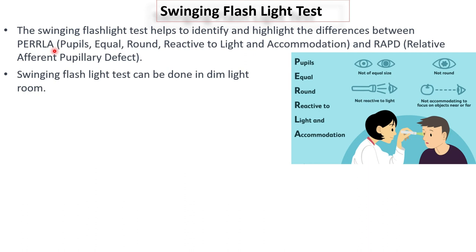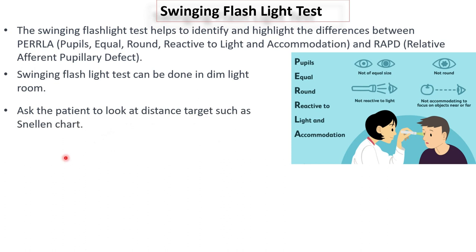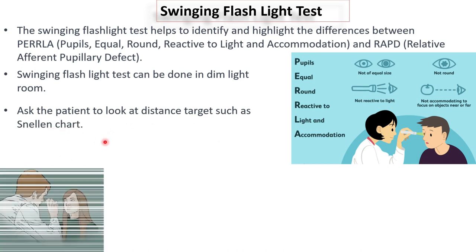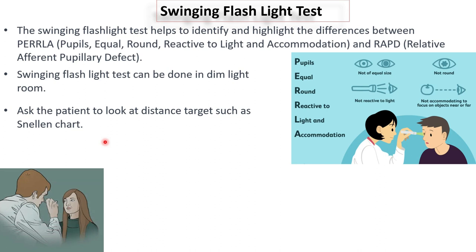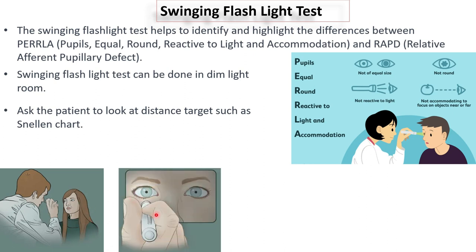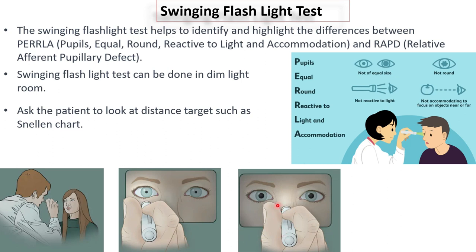Let's see the procedure of the swinging flashlight test. First, switch off the room light because dim light is preferable, and give the patient a Snellen chart target. Make sure you do not stand in front of the patient as their pupils will accommodate to focus on you. Now shine the torchlight into one eye at a time — the normal response would be constriction of both eyes. Then slowly move the torch past the nose to observe both eyes' pupil size and shape.